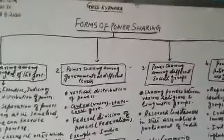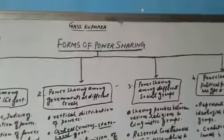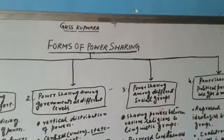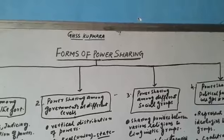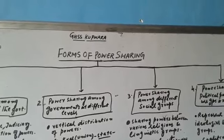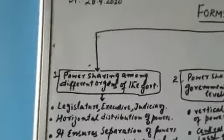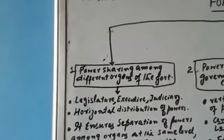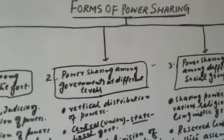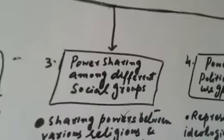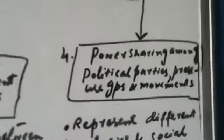Assalamualaikum dear students. We are discussing the last topic of the first chapter of political science: power sharing. Today's topic is forms of power sharing, or types of power sharing. We have four types: power sharing among different organs of government, power sharing among different levels, power sharing among different social groups, and power sharing among political parties, pressure groups and movements.